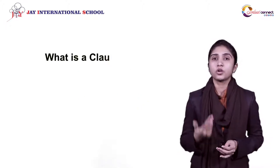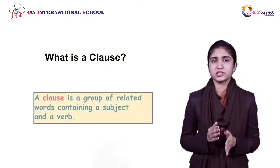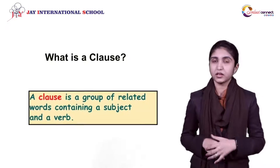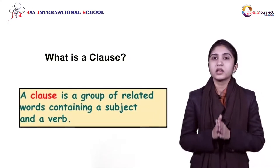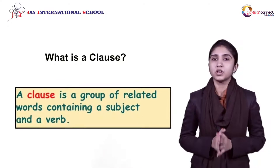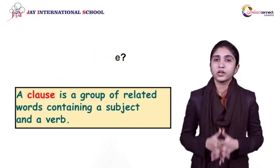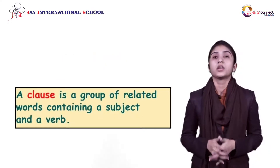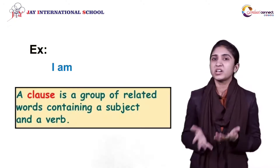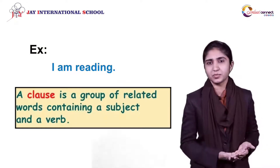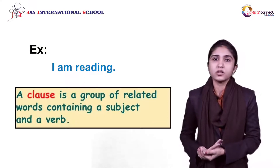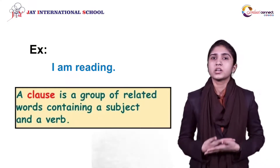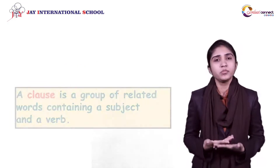Now, what is a clause? A clause is just a bit opposite of a phrase. A clause is also a group of words, but it has a subject and a verb and it can stand on its own. For example, 'I am reading.' Here the subject is mentioned and the action going on is also mentioned. Sometimes a clause can fulfill its own meaning and make a whole sentence.